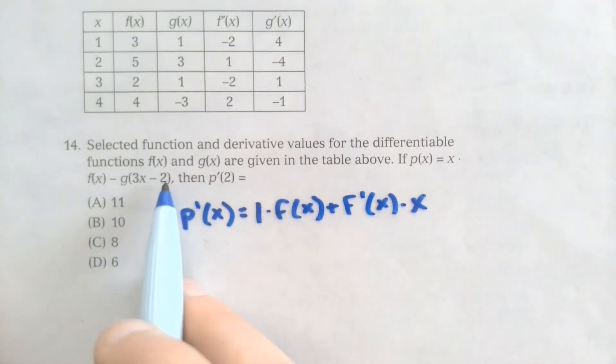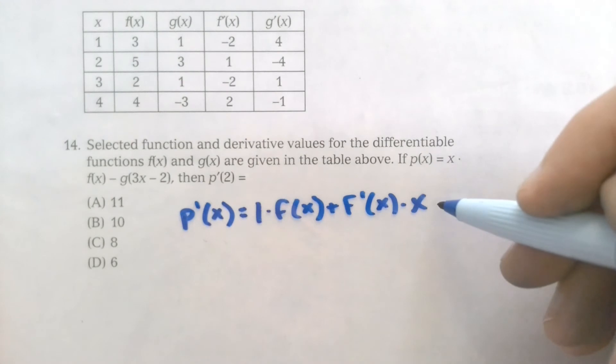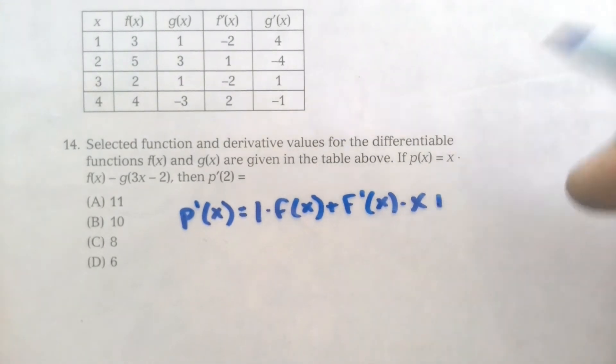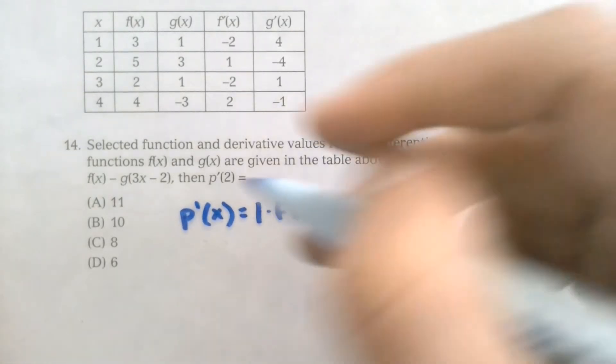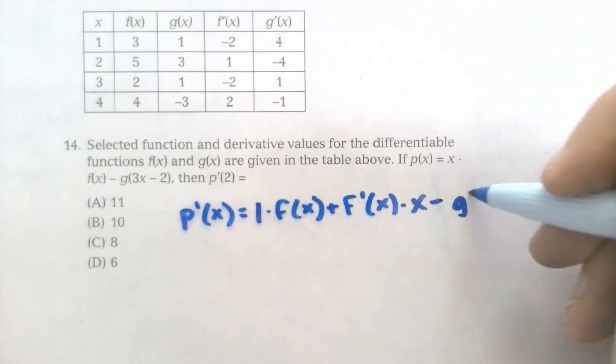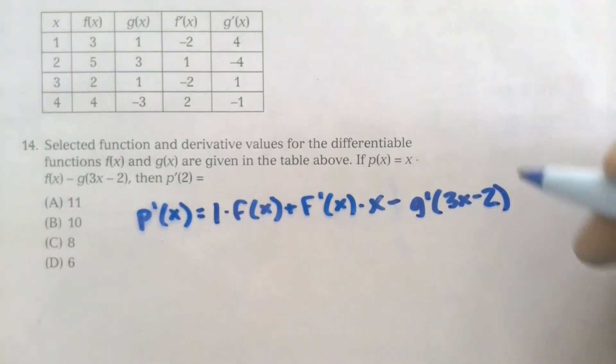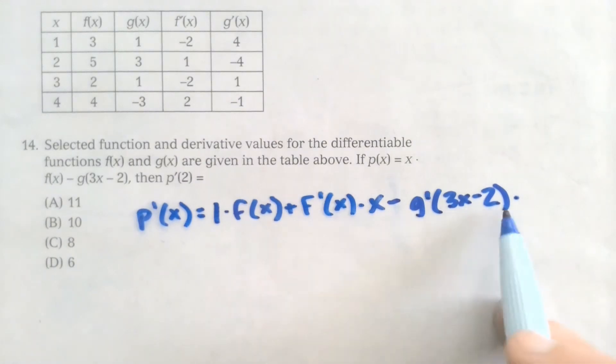For this g of 3x minus 2, I need to use the chain rule because I have a function inside of g of x. So my derivative is going to be g prime of 3x minus 2. But then I also have to multiply it by the derivative of the inside, so I'm multiplying by 3.